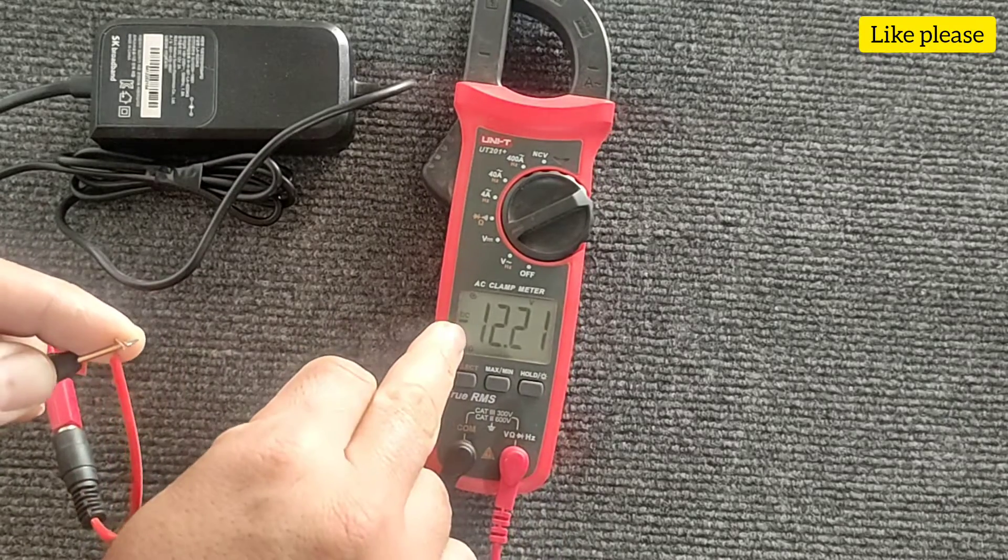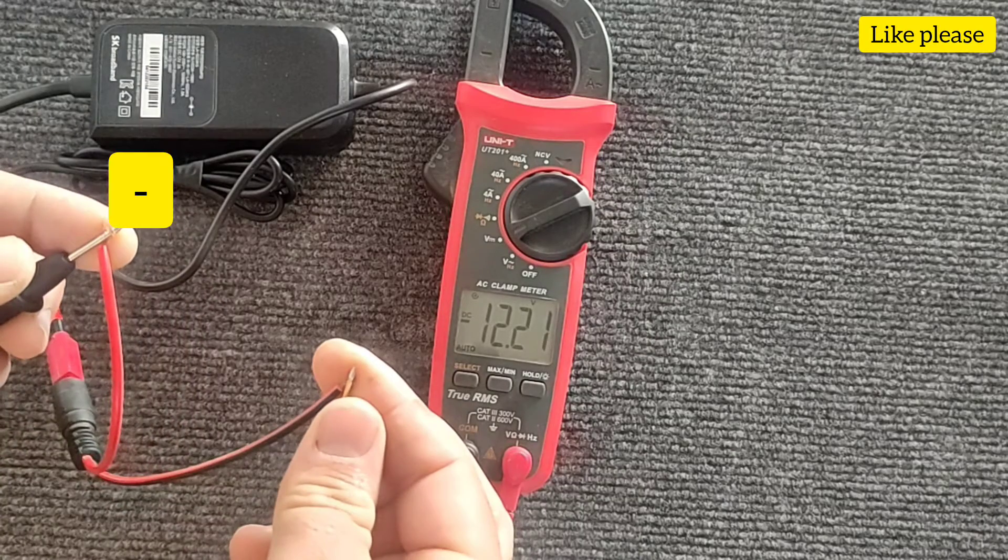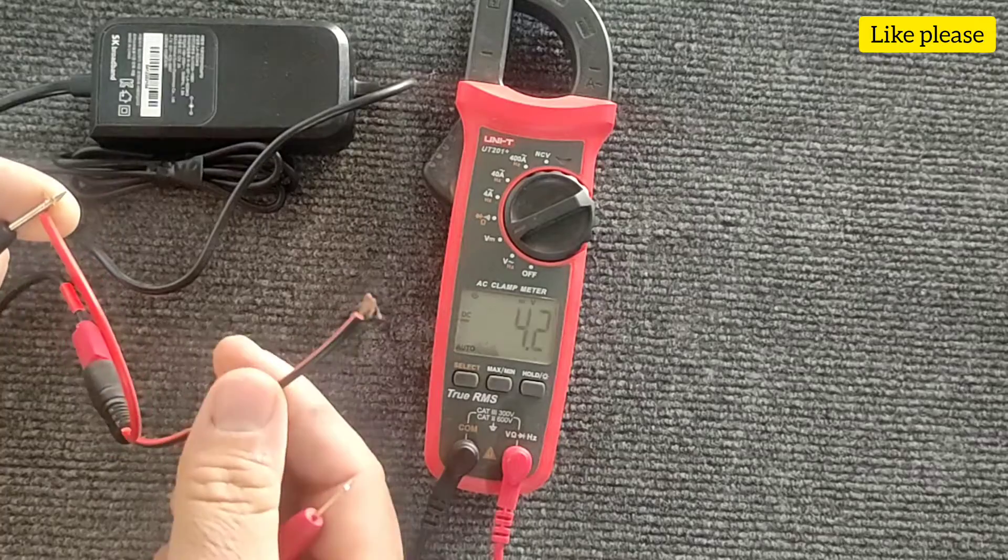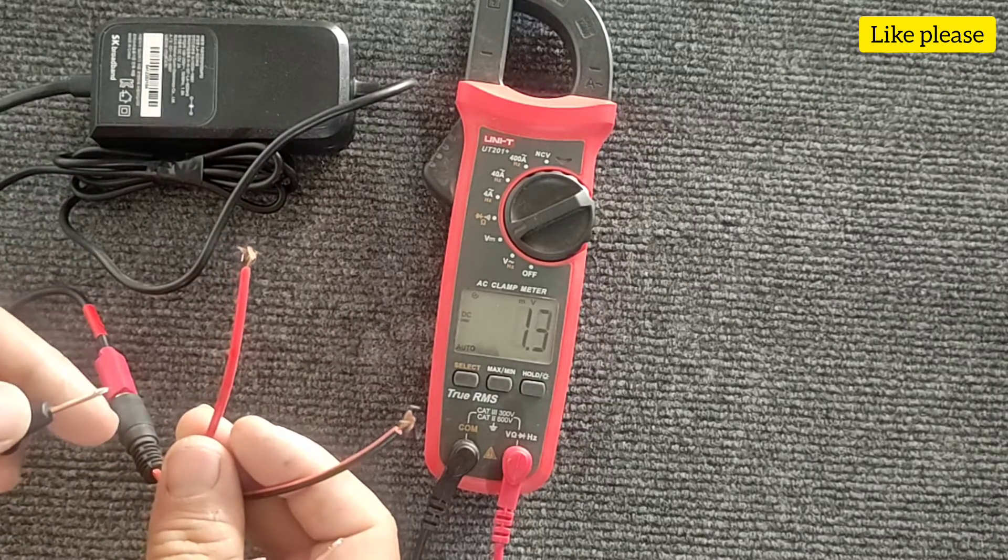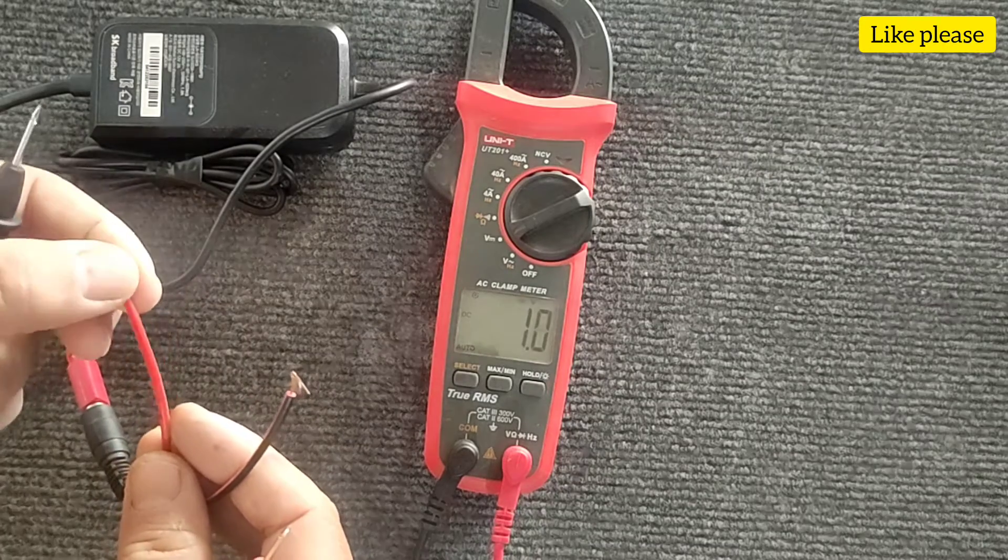And if the voltage sign is negative, it means that the wire connected to the red probe is negative and the other is positive. This goal is easily achieved.